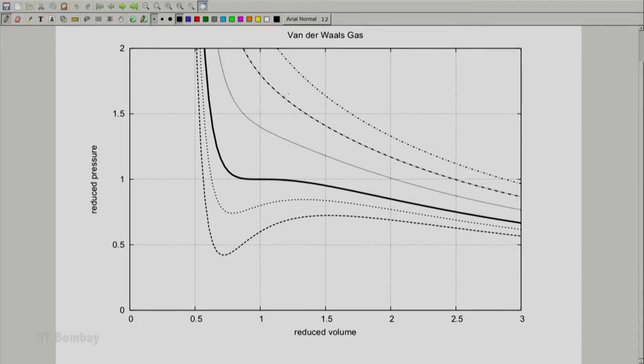It is now time for us to look at the state space of a Van der Waals gas. And let us look at the PV diagram on which a few isotherms are plotted. Here we have the Van der Waals gas equation of state plotted as a set of isotherms, pressure on the y-axis, volume on the x-axis. So what we have is essentially the PV diagram for a Van der Waals gas. Now notice that what we have shown here is the reduced pressure and what we have shown here is the reduced volume.